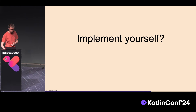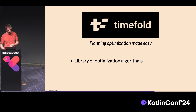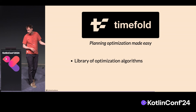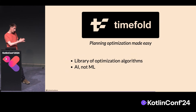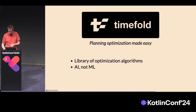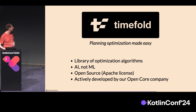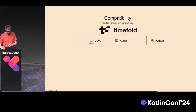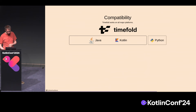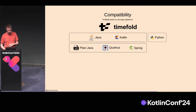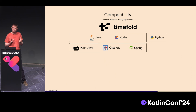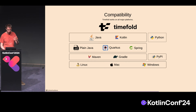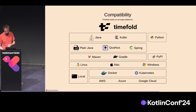You could implement that yourself, or you could use our open source library called TimeFold. It's a library of optimization algorithms including late acceptance, taboo search, and more. It's AI, but it's not machine learning — AI is more than machine learning. It's open source on the Apache license, actively developed by our open core company. It's compatible with Kotlin — we have an example with Kotlin and Quarkus showing you how to use it. We support Maven and Gradle, and it works on all operating systems and clouds.